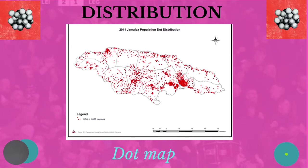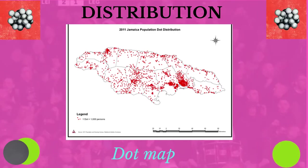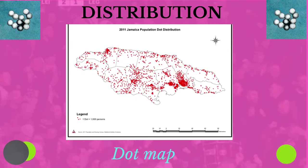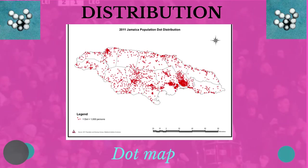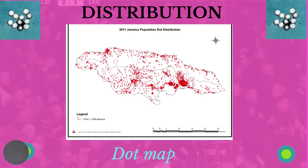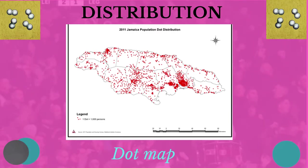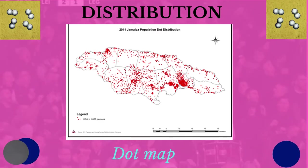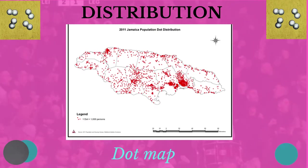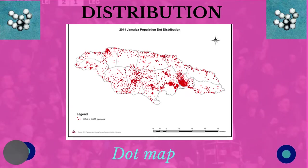Population distribution can be best illustrated by a dot map, like the one you are seeing here of Jamaica. The key shows that each dot represents 1,000 persons. This means that the places where the dots are located on the map indicate where 1,000 or more persons live. The empty spaces indicate that less than 1,000 persons live in those places.